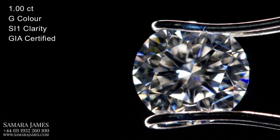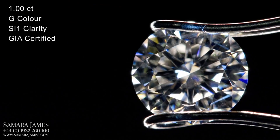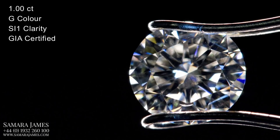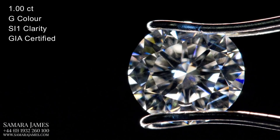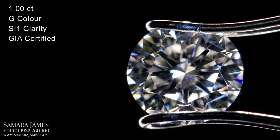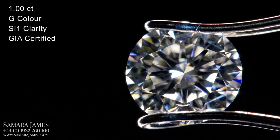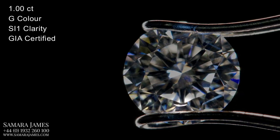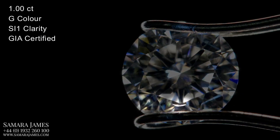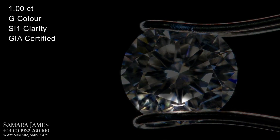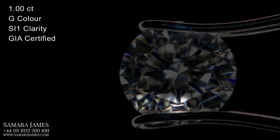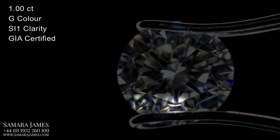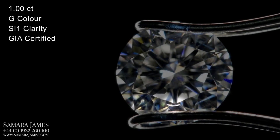If we have a look, you can see this diamond with SI1 clarity, which again has been graded by GIA. This particular diamond has what's called a crystal and quite a significant feather just off the table. It also has some pinpoints dotted around the stone.